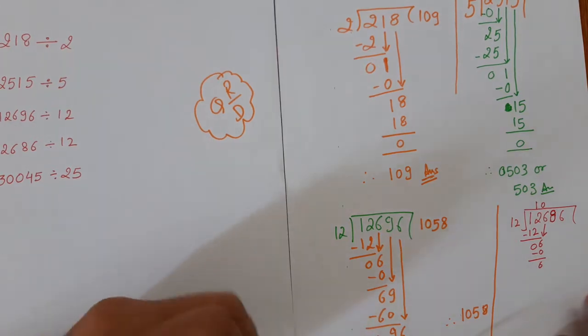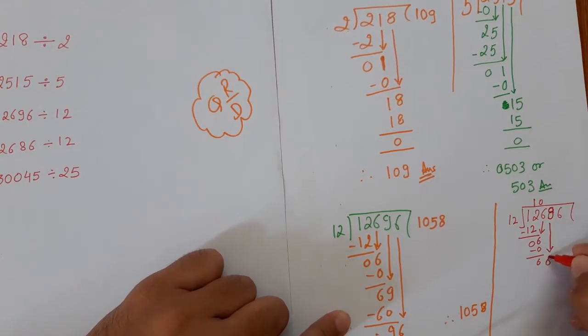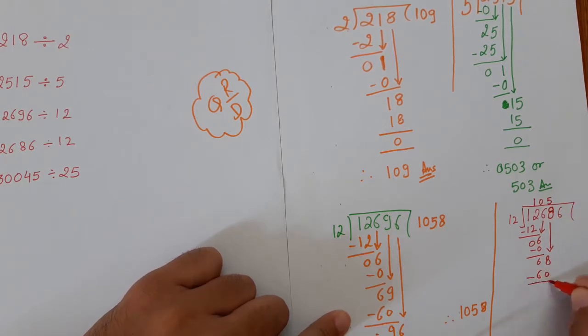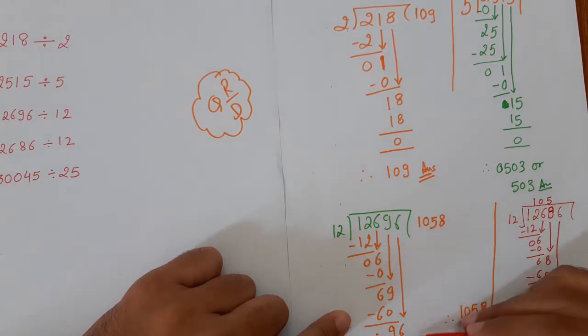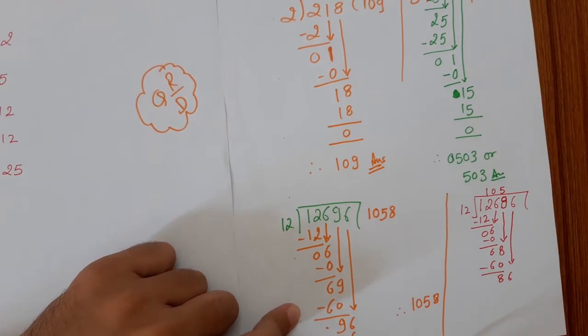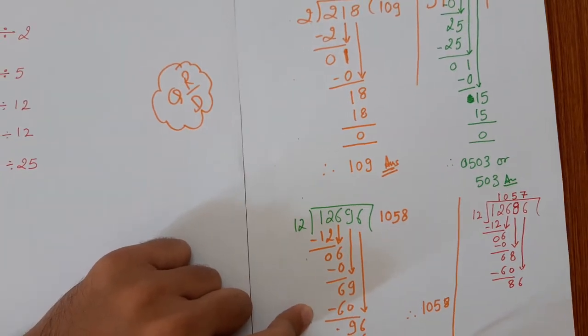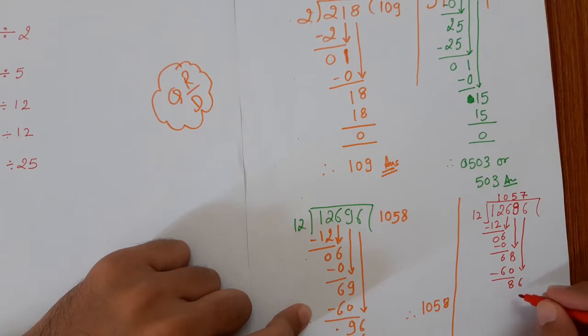Once you are comfortable with this process you can skip the steps. You can straight away write 0, then 8. So this time also multiply by 5, we get 60, you get 8, take down 6. Now this time we won't be able to multiply it by 8 because 12 times 8 is 96, which is more than 86. So what we will be doing is 12 times 7. 12 times 7 is 84.